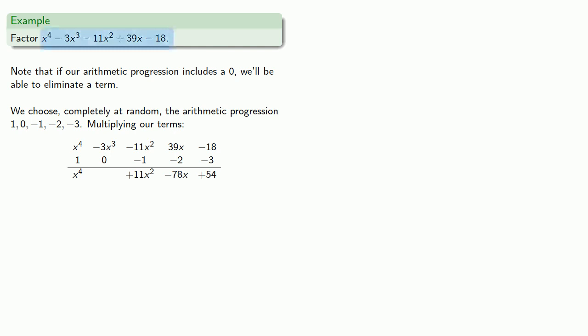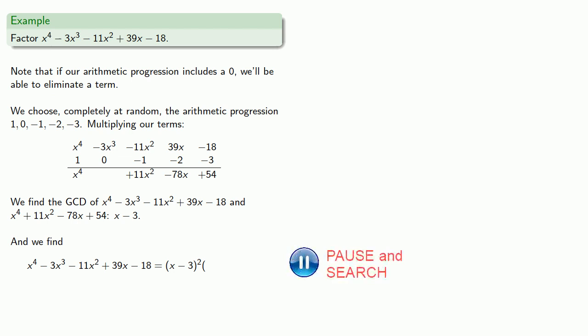And Hudde's theorem says that if this original polynomial has a repeated root, then that repeated root will be a common factor with our new polynomial. So, we'll find the GCD of our two polynomials, which turns out to be x minus 3. And that means x minus 3 is a factor of our original polynomial. And in fact, it's a repeated root. Our original polynomial is x minus 3 squared times another polynomial, which turns out to be unfactorable. And so here's our factorization.